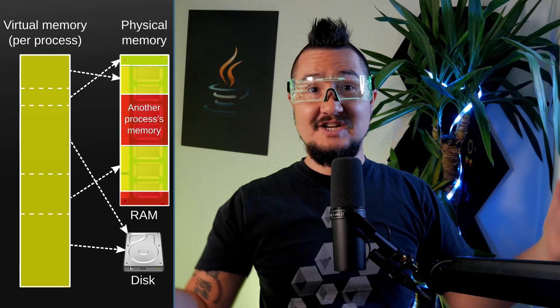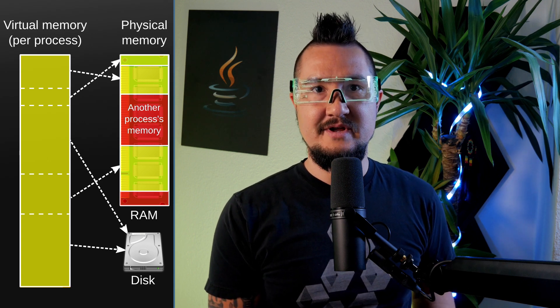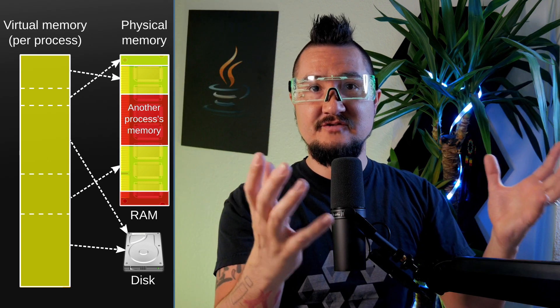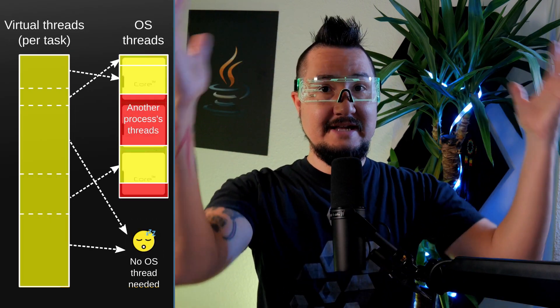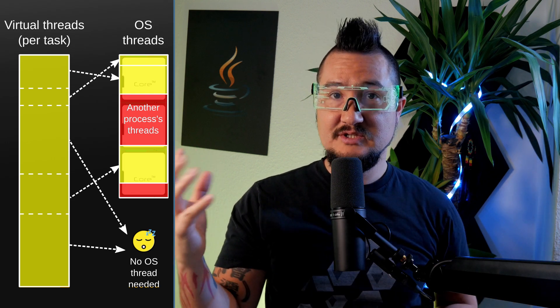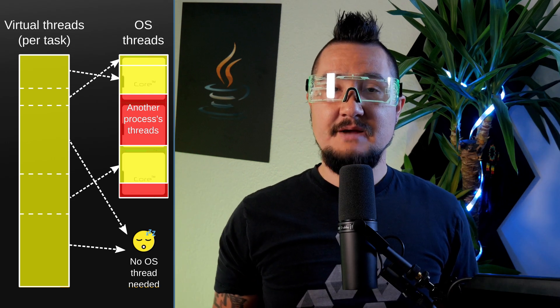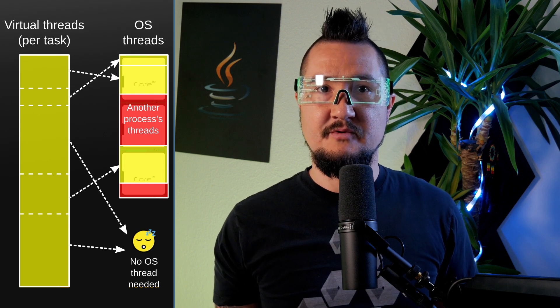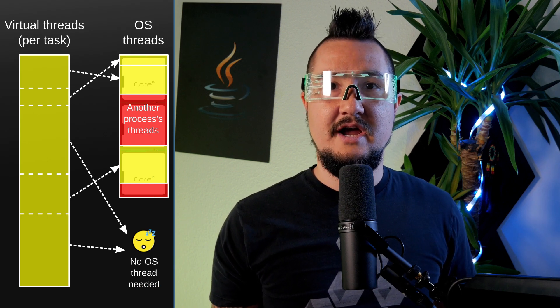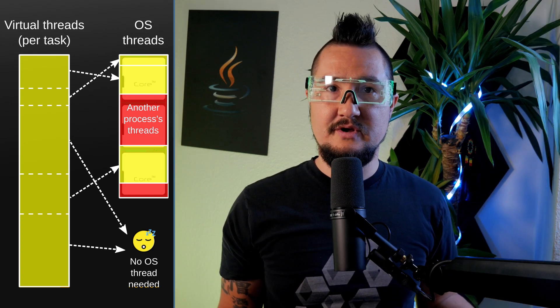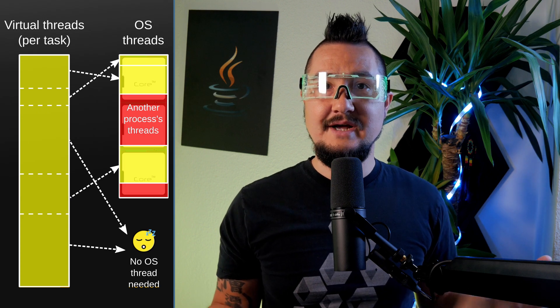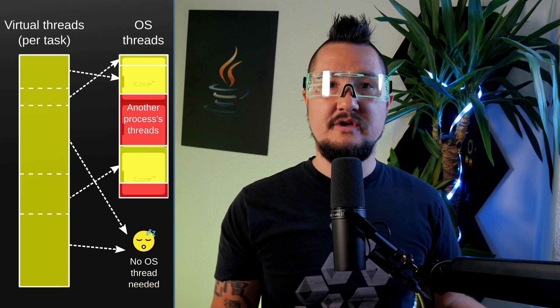Critically, virtual threads incur minimal overhead, so there can be many, many, many of them. Just as operating systems give the illusion of plentiful memory by mapping a large virtual address space to a limited amount of physical RAM, the JDK gives the illusion of plentiful threads by mapping a large number of virtual threads to a small number of OS threads. And just like programs barely ever care about virtual versus physical memory, concurrent Java code doesn't have to care whether it runs in a virtual or platform thread. You can focus on writing straightforward, potentially blocking code. The runtime takes care of sharing the available OS threads to reduce the cost of blocking to near zero.